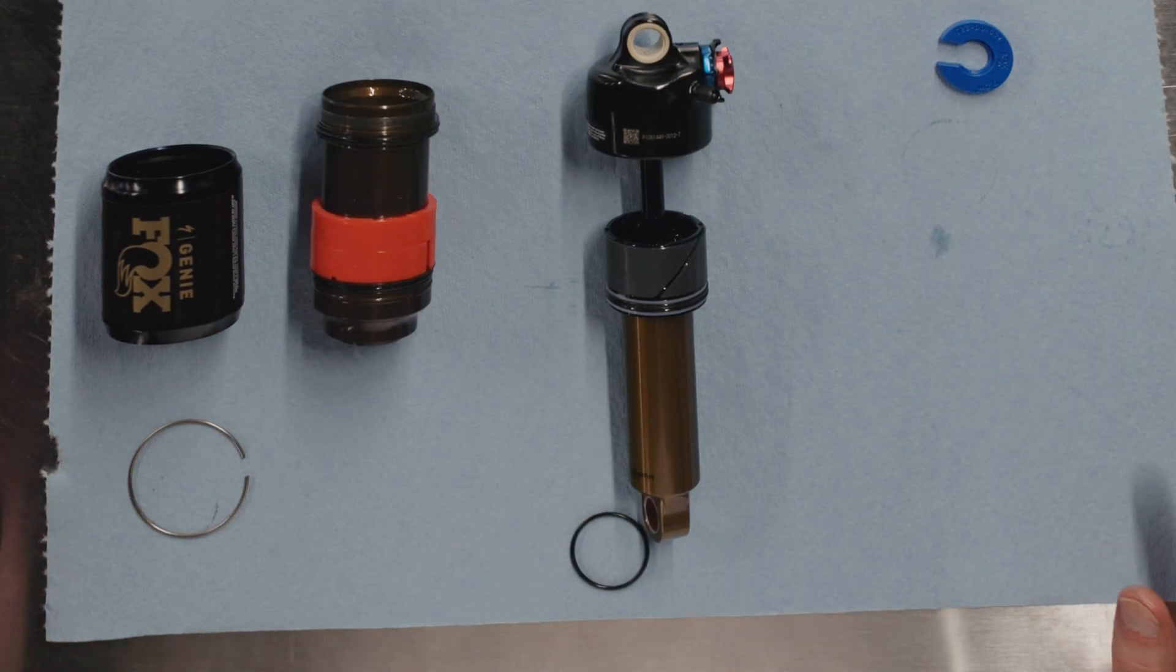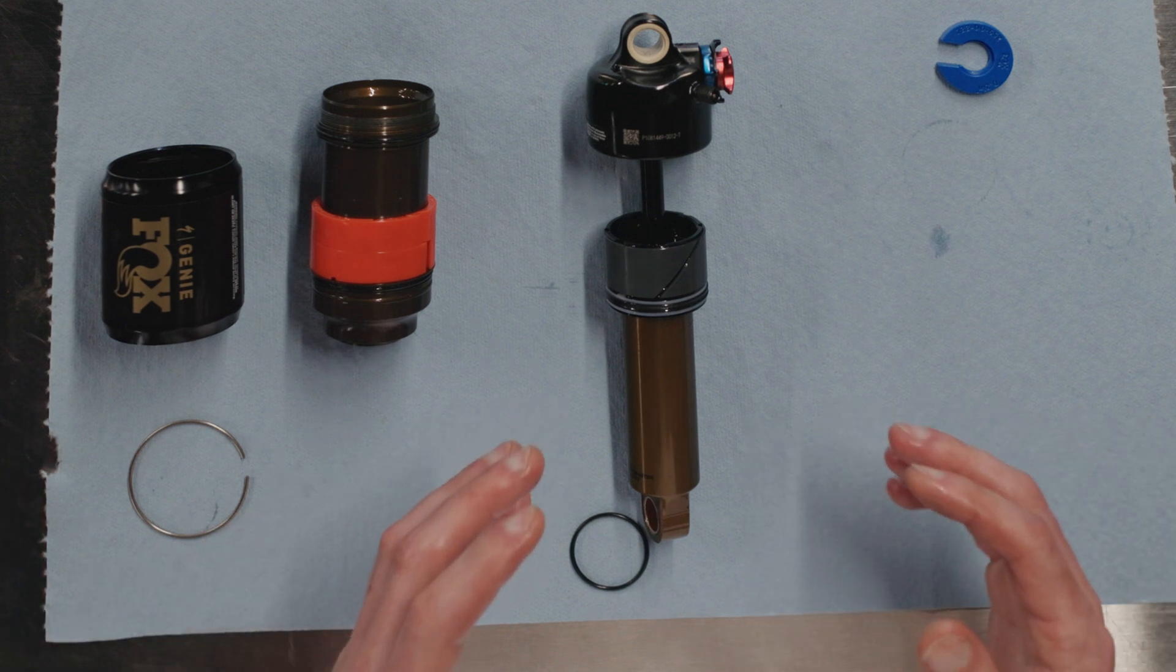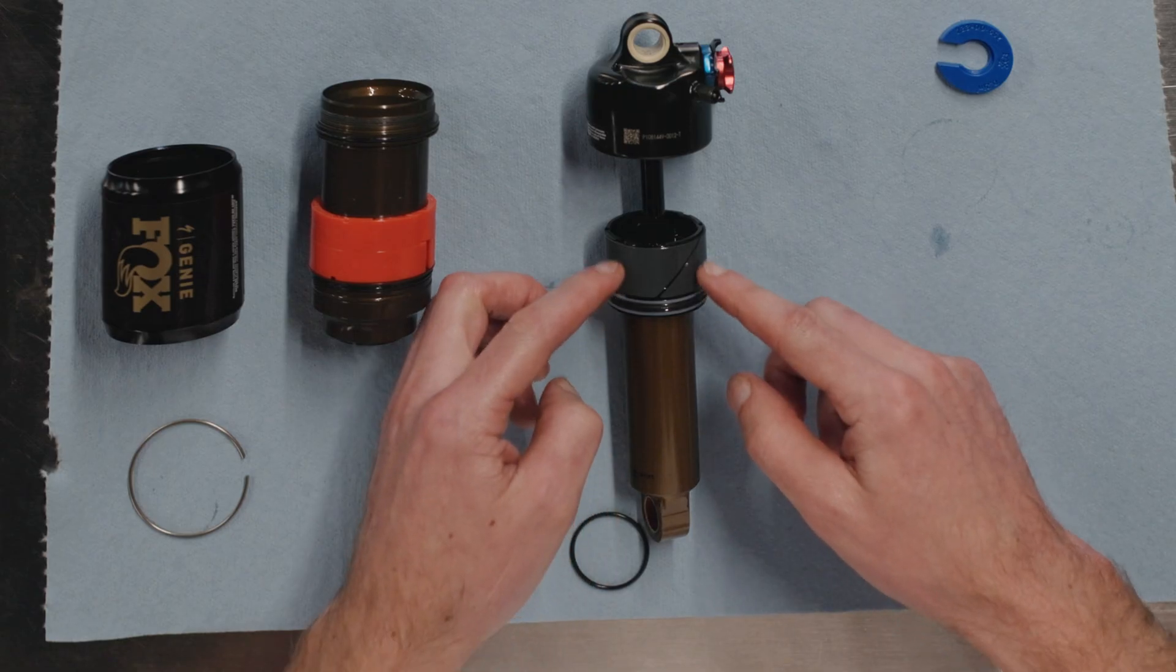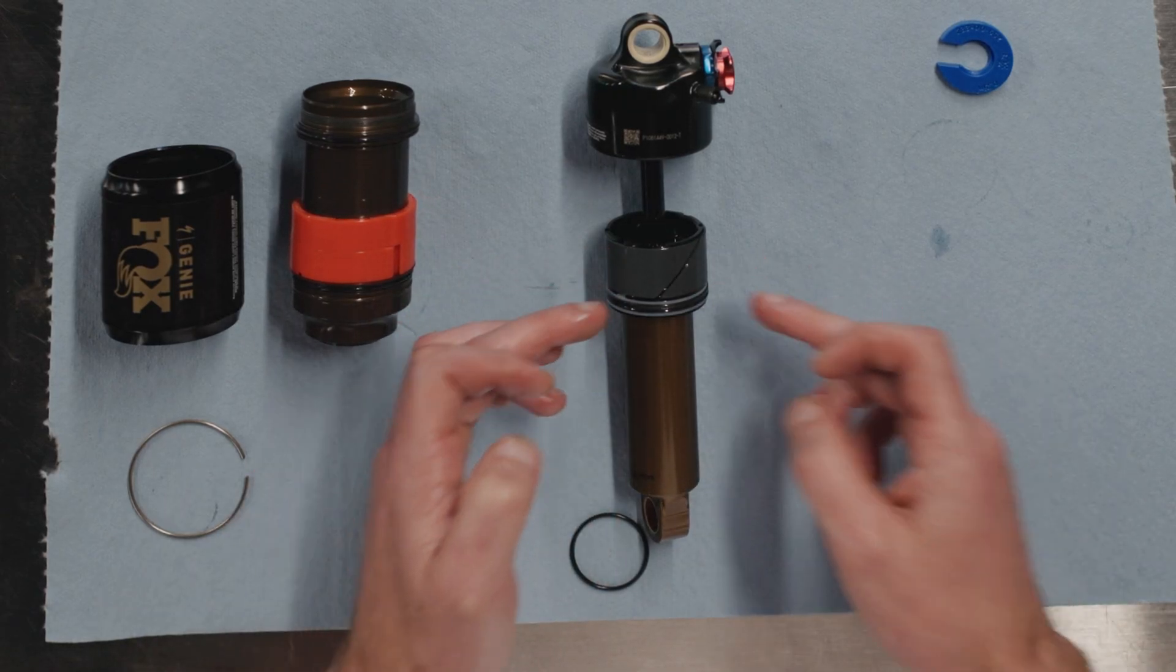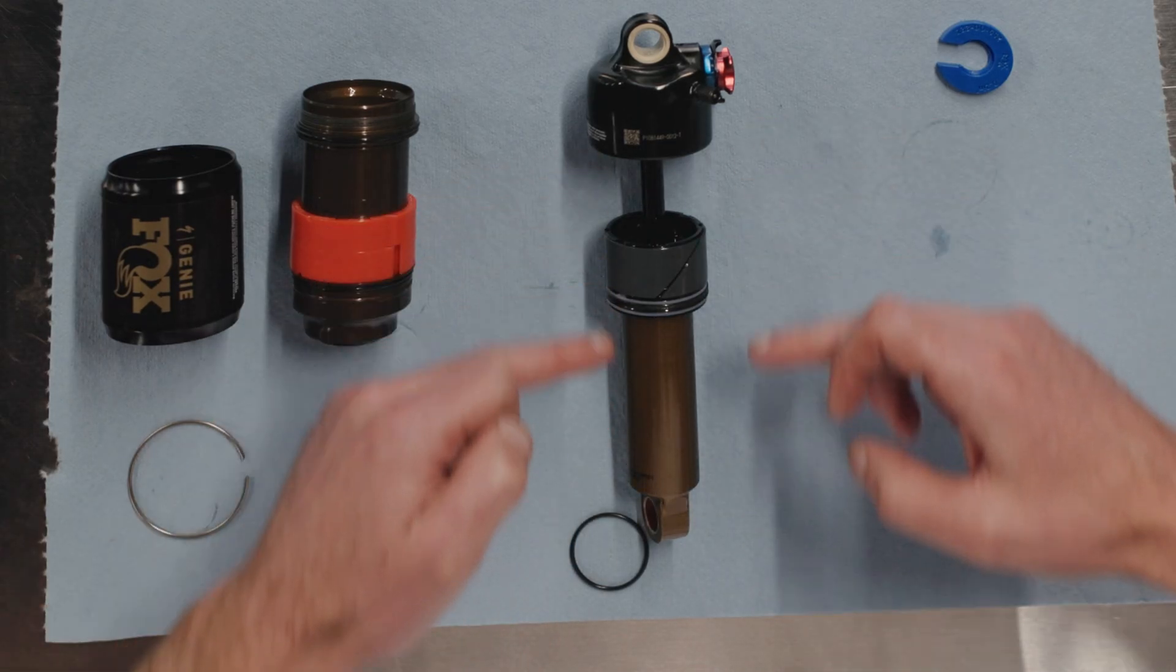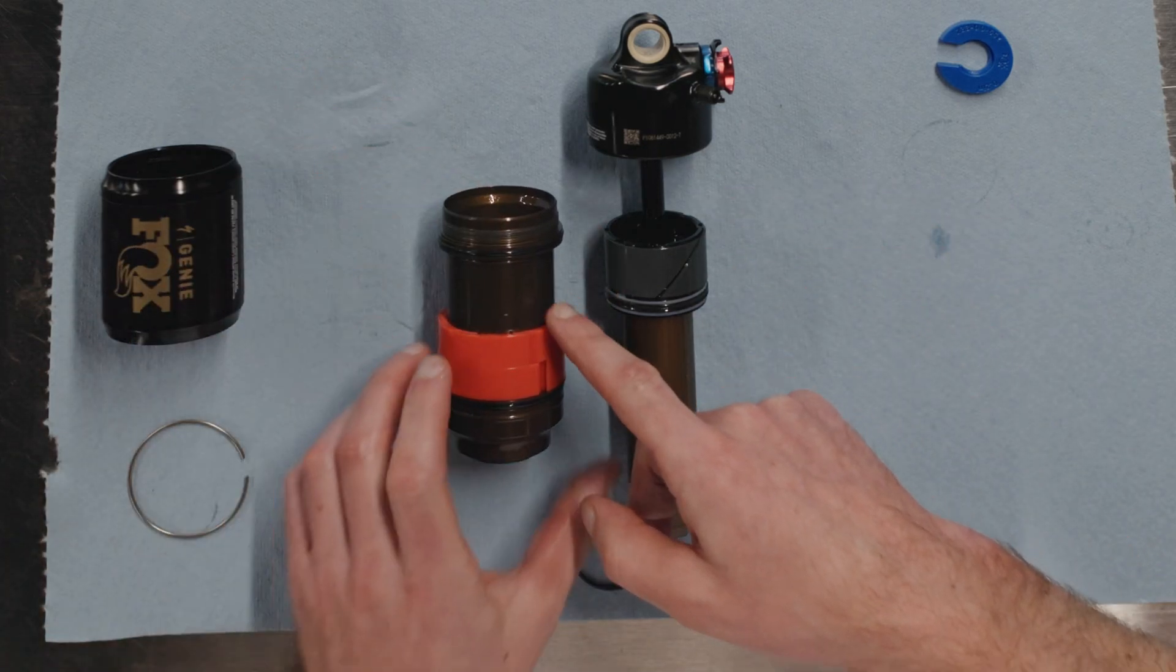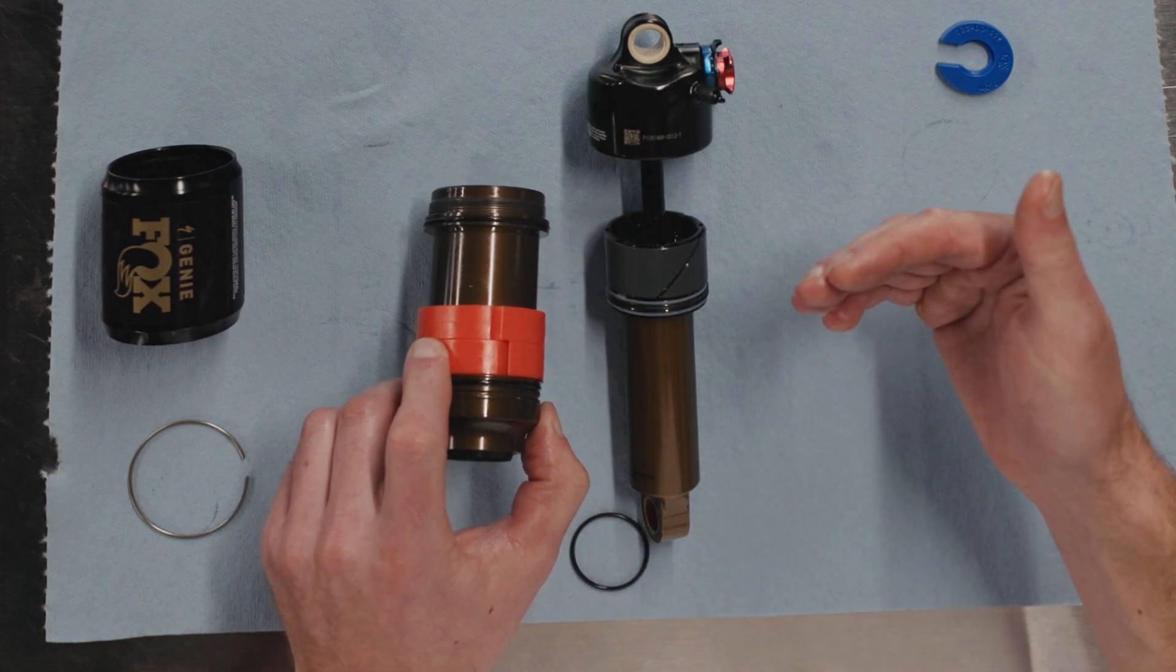In terms of how the Genie shock functions and how it differs from your standard shock, one of the coolest parts about this shock is it is very simple in the way that we're doing things. Like I said, there's no new moving parts within the shock. The Genie band is a unique part. Most shocks are not going to have this bushing here, but we just attach that bushing to the already moving main seal head. That seal head moves up and down through the stroke, and as it moves up and down through the stroke, it correlates with cross holes in this air sleeve and cuts off that volume.